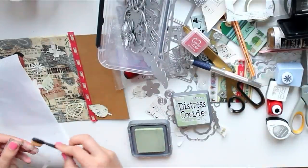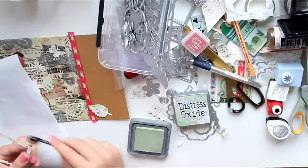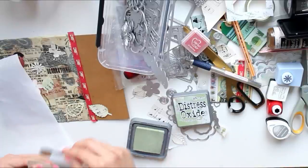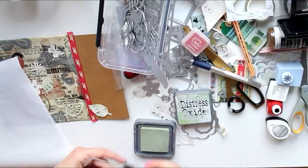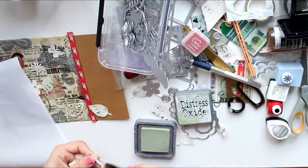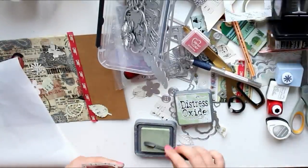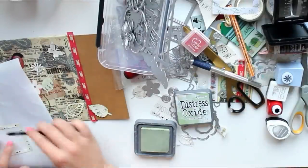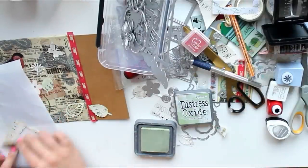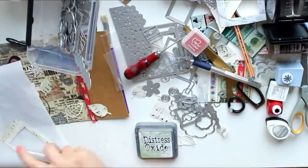Putting some distress oxide on the frame as well. I think this one is called bundled sage if I'm not mistaken. I will link everything I have used down below as always. I always include an Amazon link and a craft stash link if I can.